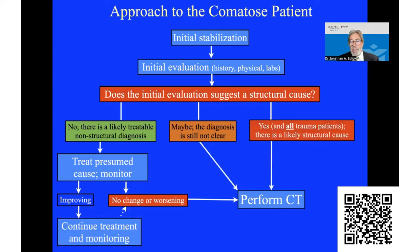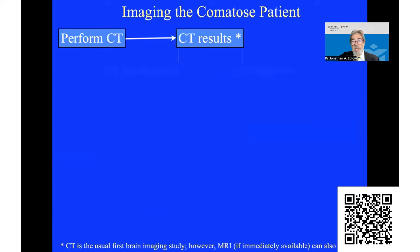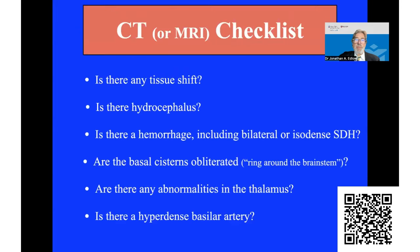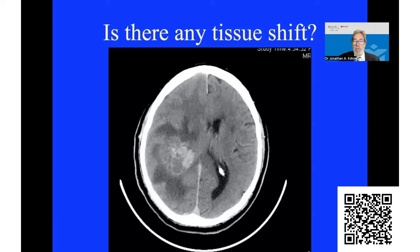If the diagnosis is not clear, or there's significant doubt, get a CT. If you think it's structural, and in all patients with head trauma, the next step is a non-contrast CT scan. If the CT is diagnostic, you have your treatment path. There is a checklist to think about: Is there tissue shift? Is there hydrocephalus? Is there hemorrhage? Are the basal cisterns open? Are there any abnormalities in the thalamus? And is there a hyperdense basilar artery?